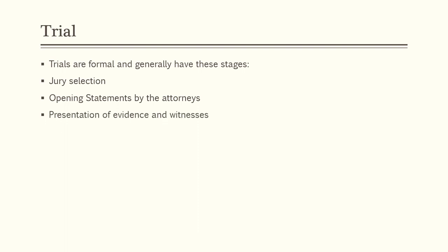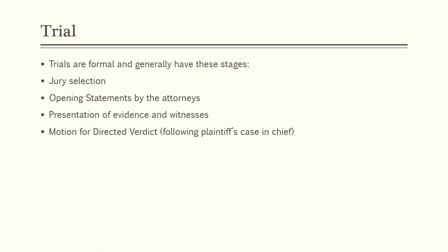Then there is presentation of evidence and witnesses. The plaintiff has the burden of proof in civil trials — usually by a preponderance of the evidence — so they present their evidence and witnesses first. Once the plaintiff presents their evidence and witnesses are cross-examined by the defense, the defendant can file what's called a motion for directed verdict following the plaintiff's case in chief. It basically says the plaintiff didn't meet their burden of proof, so the judge should dismiss it. It's a very hard motion to win mid-trial, and usually it's filed solely to preserve error and the ability to file certain post-trial motions.